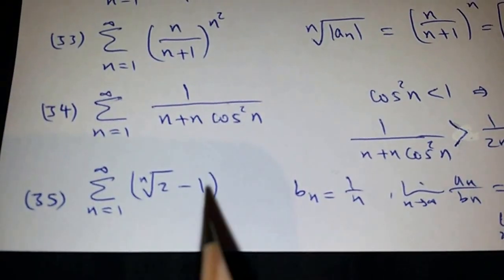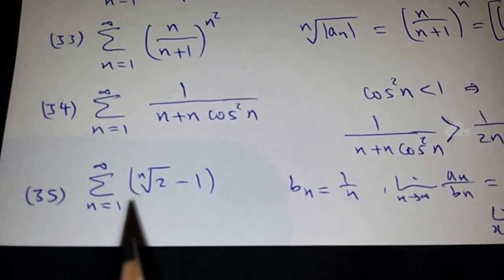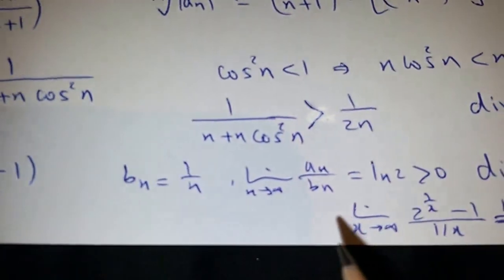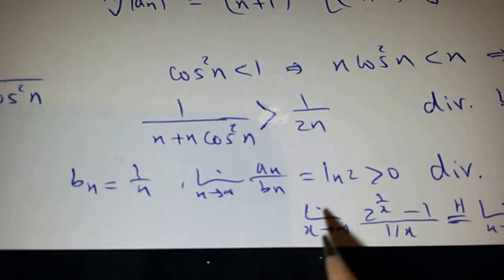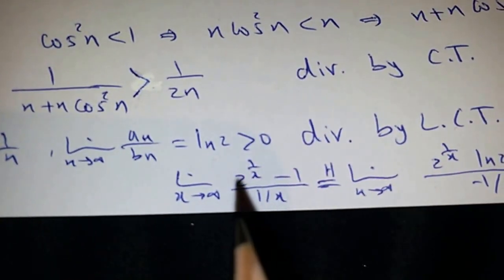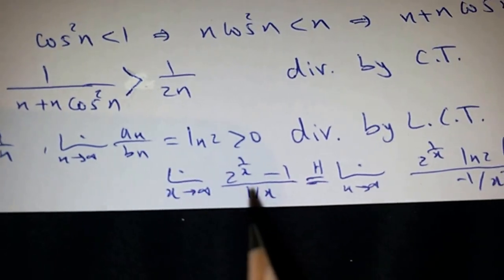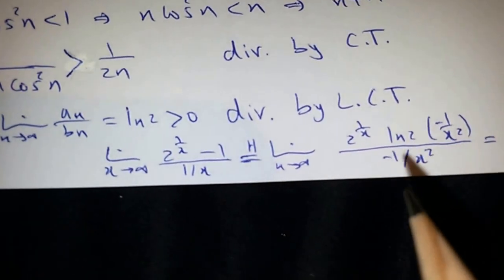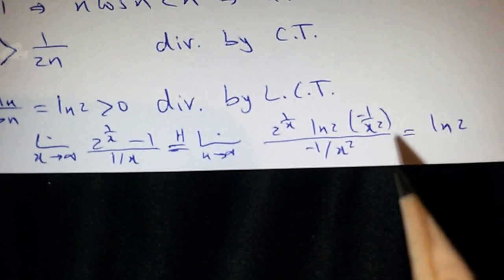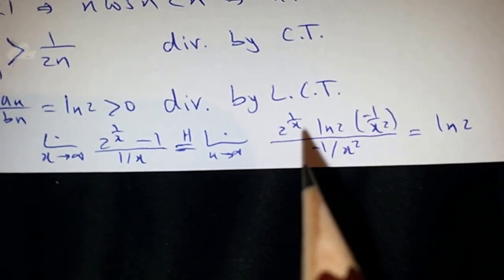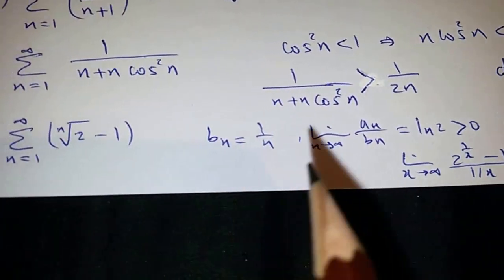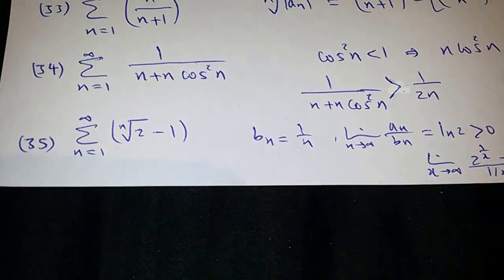The last example is a very nice one, and you solve it by the limit comparison test. Take B_N = 1/N and try to find the limit — it is not easy; you need to use L'Hôpital's rule. Use functions, find the derivative of the numerator and the derivative of the denominator. These two will cancel, and you will get ln(2), because 1/∞ = 0 and 2^0 = 1. Since ln(2) > 0 and 1/N is divergent, this series is divergent too.